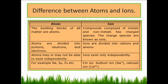Difference between atoms and ions: an atom is the building block of all matter. An ion, found in compounds composed of metals and non-metals, is a charged species. Atoms are divided into protons, neutrons, and electrons. Ions are divided into cations and anions. Atoms may or may not be able to exist independently, but ions exist only independently.